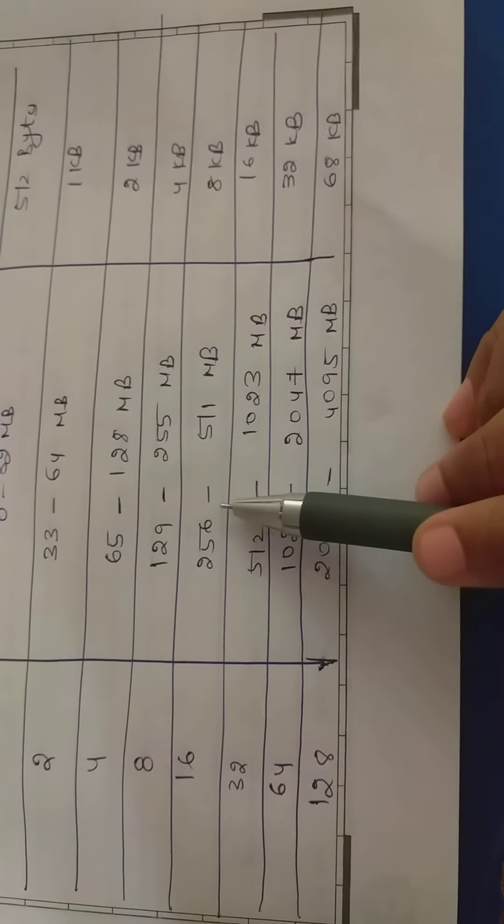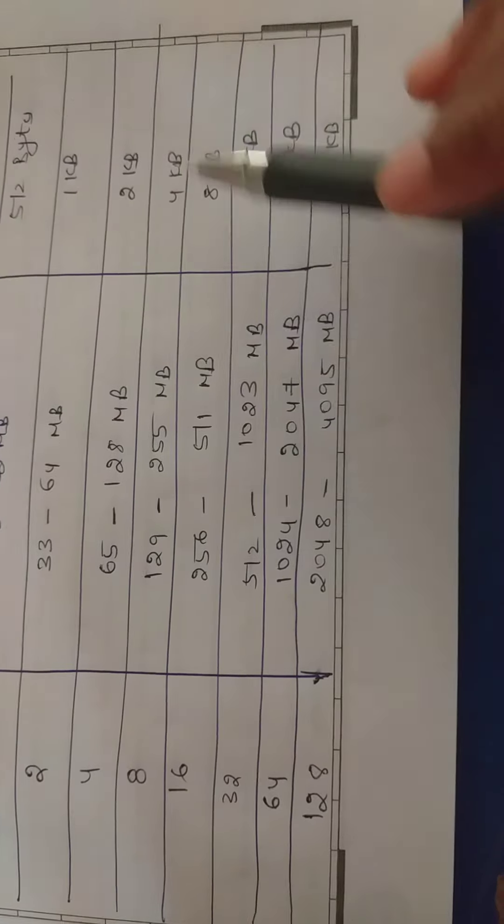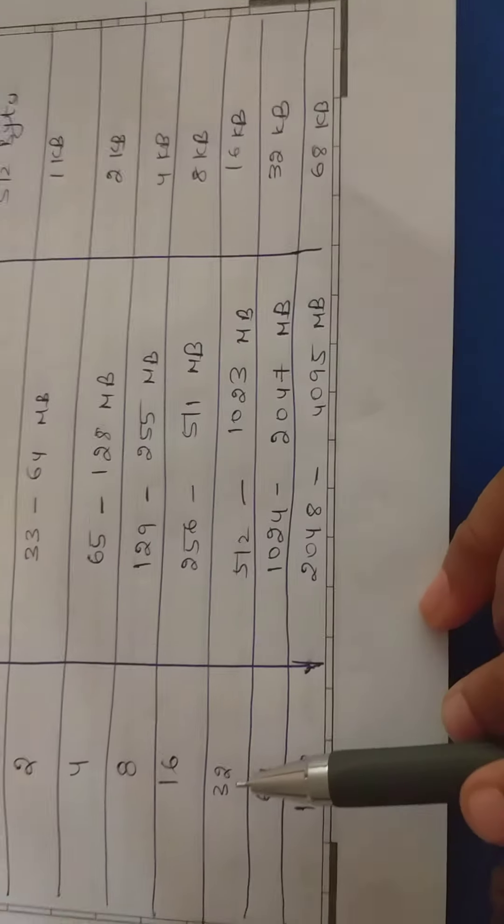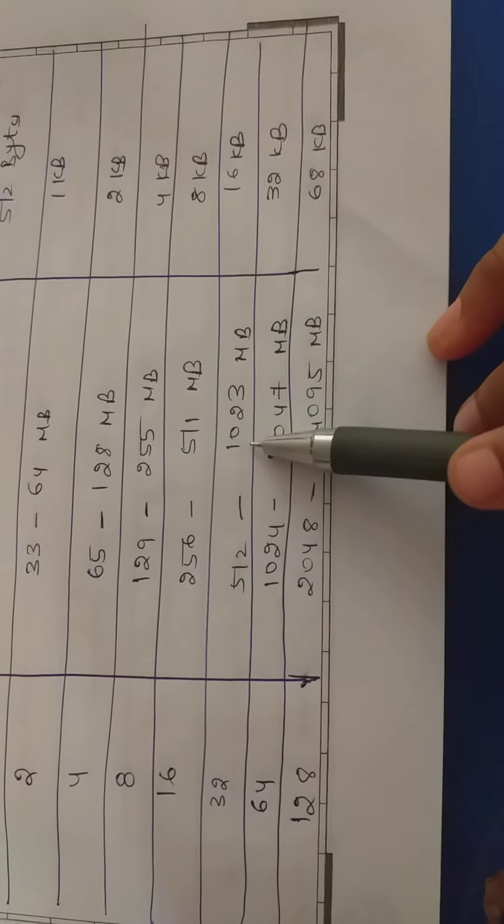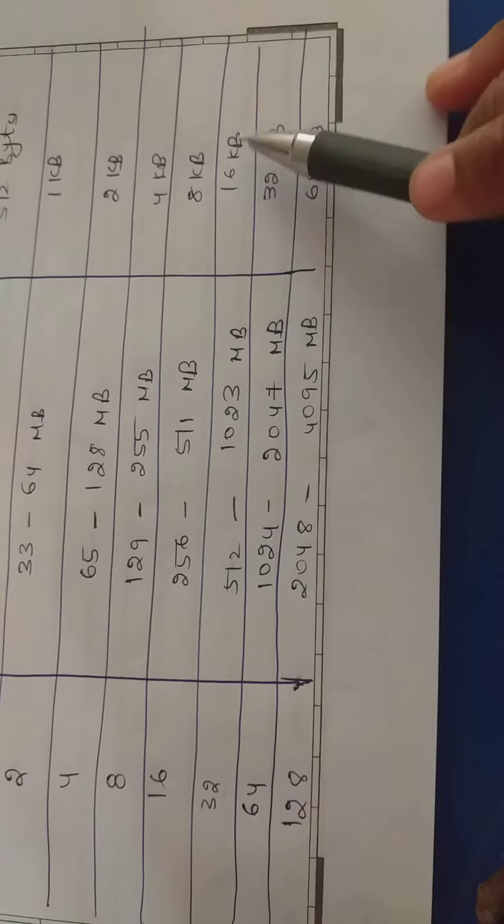16: 256 to 511 MB, 8 KB. 32: 512 to 1023 MB, 16 KB.